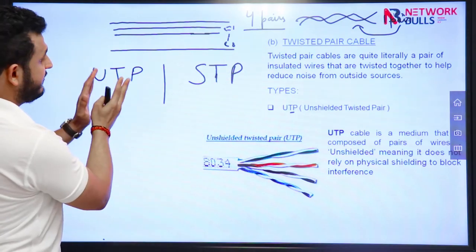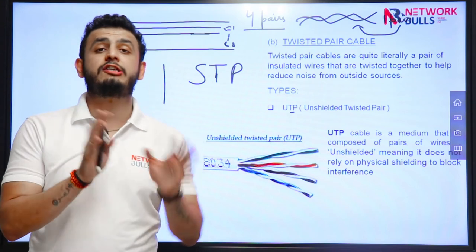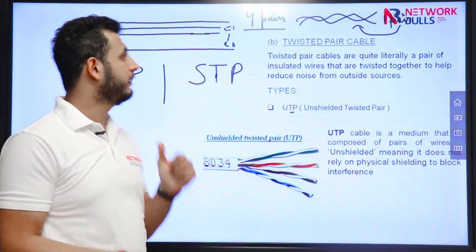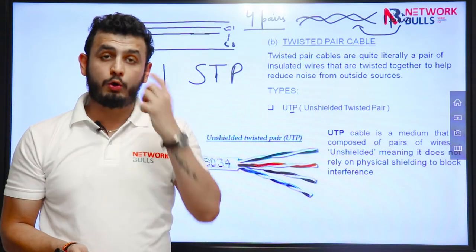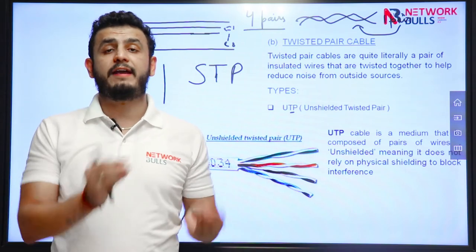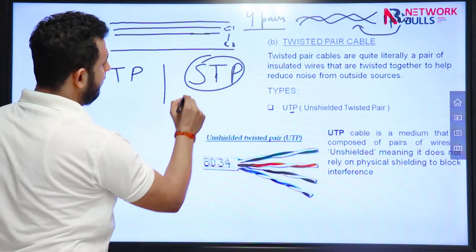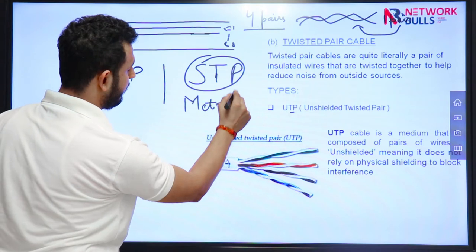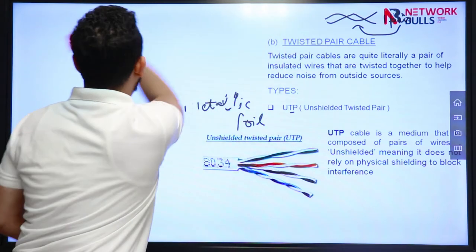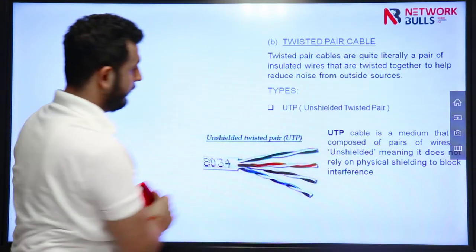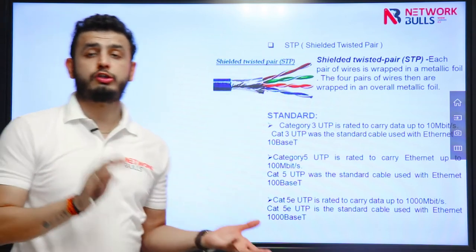UTP stands for unshielded twisted pair. In UTP, we are not relying on any physical shielding to prevent cross-talk or interference. Cross-talk means interference of signals between the pairs of wires used for sending and receiving data. To prevent that in UTP, we do not use any physical shielding. But in STP, we use something called metallic foil. In UTP there is no metallic foil, as you can see in the diagram. But in STP, we have metallic foil to avoid cross-talk and interference.